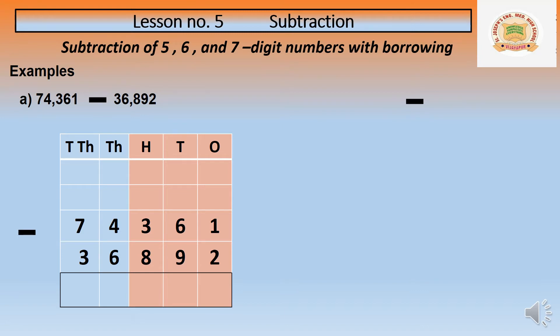So we will borrow from the next number. In the tens place we are having 6, which means 6 tens — that is sixty. When you borrow from 6 tens, it will become 5 tens — fifty. We have borrowed one ten to the ones number, so this 1 will become 11. Now eleven is bigger than two, and eleven minus two is nine.